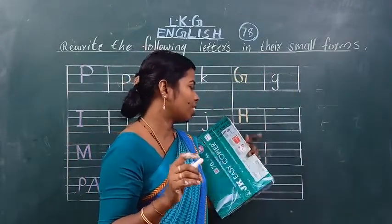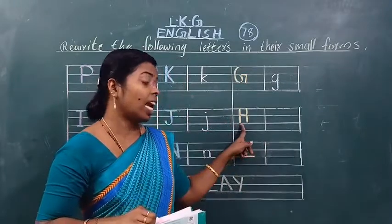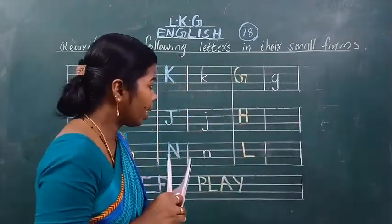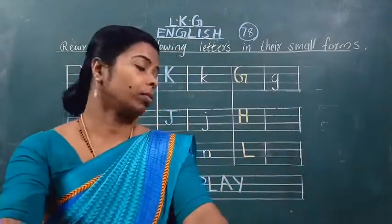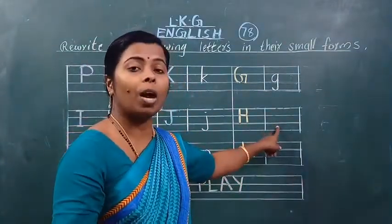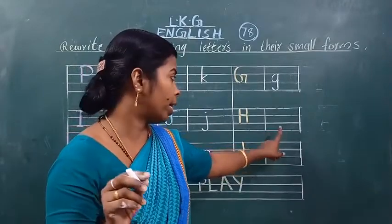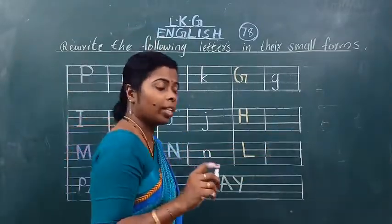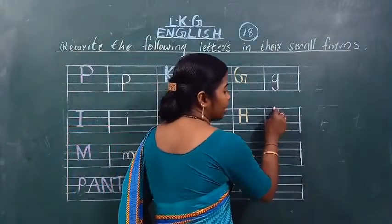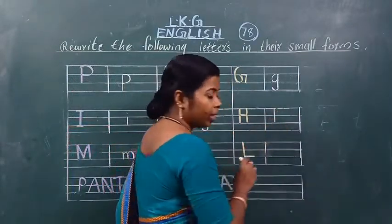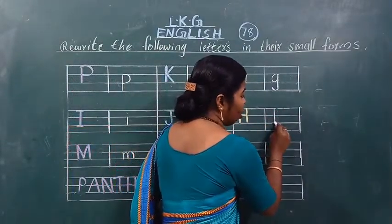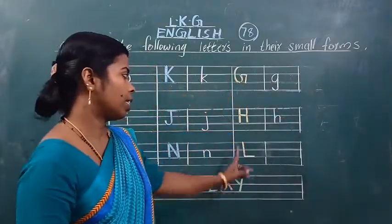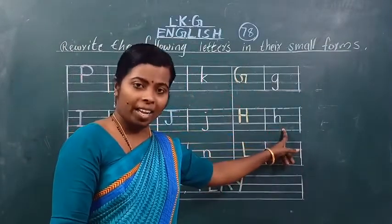Then next — which letter is this? This is capital letter H. और इधर क्या लिखना है हमको? इधर small letter H लिखना है। Small letter H ऐसे लिखना है — standing line बनाना, फिर इसको ऊपर, इसी lane से ऊपर आना, curve बनाना है। This is small letter H.